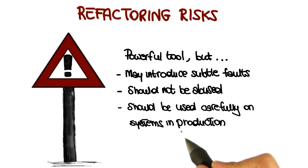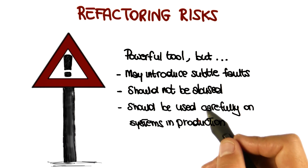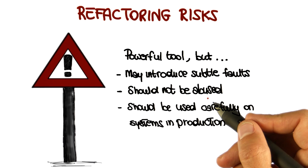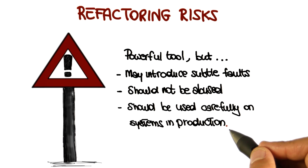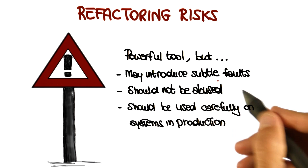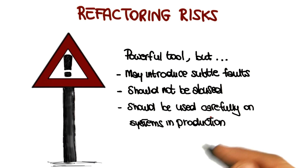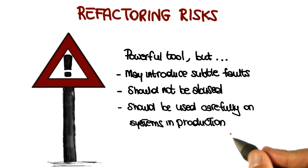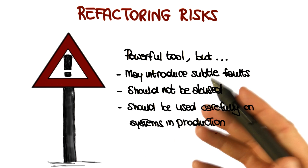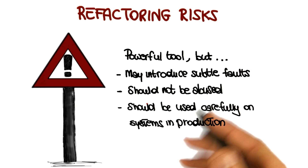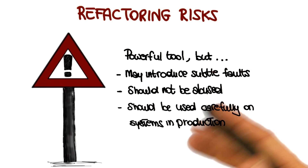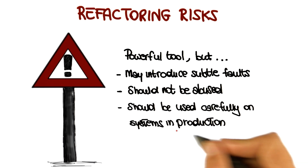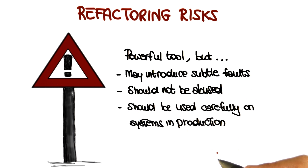For the same reason, you should be particularly careful when using refactoring for systems that are in production. If you introduce a problem before the system goes into production, you might be able to catch it earlier with testing or before it's released. But if you introduce a problem for a system already in production, you'll have to issue a new version of the code, and you might be affecting users because the code fails on their machines. So you have to be twice as careful when refactoring code for a system that is already in production.